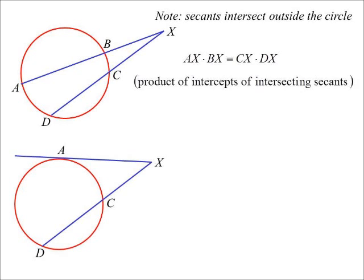Then we have one where one is a tangent rather than a secant. When I say endpoint of the chord, the chord on the tangent really is now a single point. So endpoint of the chord A to the point of intersection X, times endpoint of the chord — it's still A because we're talking about a single point — to the point of intersection. Hence we get AX squared equals endpoint of the chord to the point of intersection CX, times endpoint of the chord to the point of intersection DX. So all three are identical.